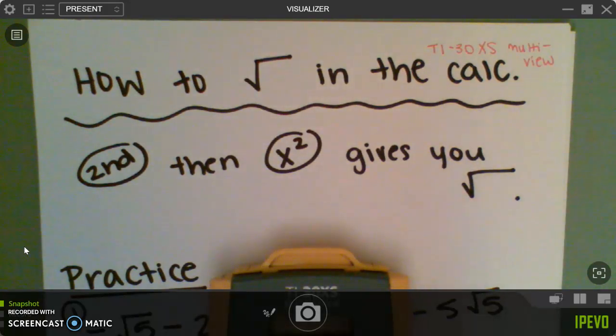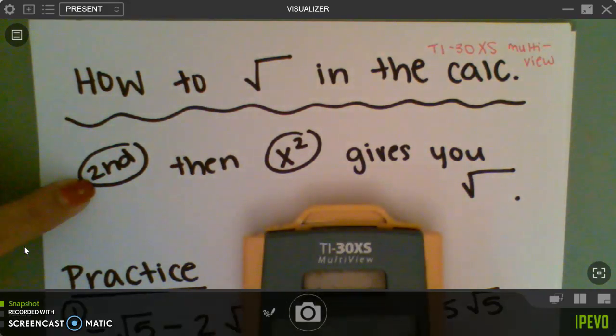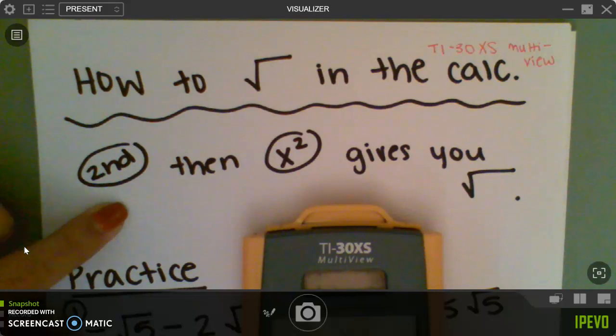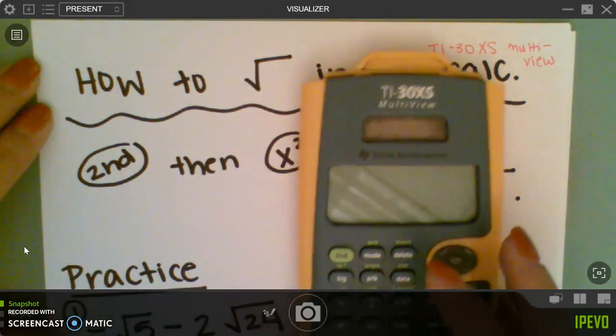Okay, so this video is how to get the square root in the calculator. You're going to have to press the second button, then x squared, and that's going to give you the root.